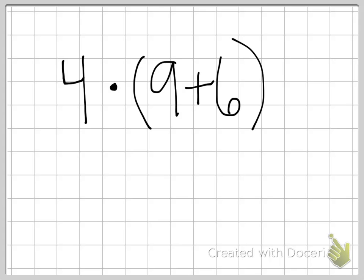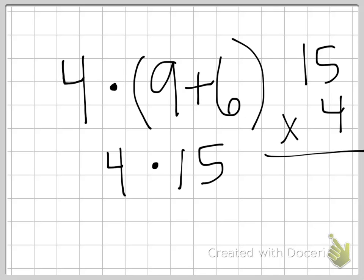So first you would do parentheses. 9 plus 6 is 15. 15 times 4 is, let's do it just like this. 4 times 5 is 20. 4 times 1 plus 2 is 60. So your answer is 60. This should have been your answer.